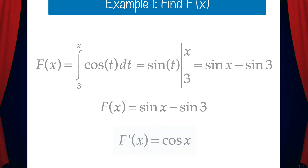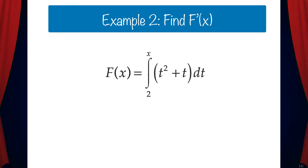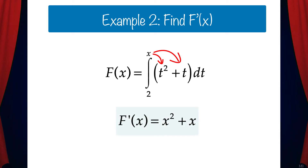Let's do another one. Let's say that capital F of x is the integral from 2 to x of the quantity t squared plus t dt. To find capital F prime of x we can use the second fundamental theorem of calculus, which means that all we need to do is replace the t's with x's in the integrand. And that gives us x squared plus x.